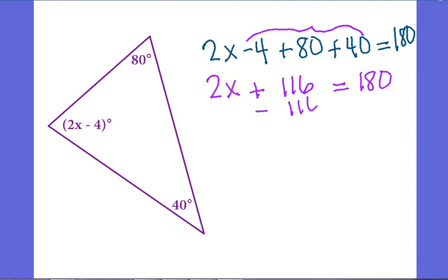Now we're going to subtract our constant. We're going to get rid of our 116. Now I'm going to have 2x. When I borrow from my 8, 10 minus 6 is 4, 7 minus 1 is 6, 1 minus 1 gives me nothing. So 2x is equal to 64.